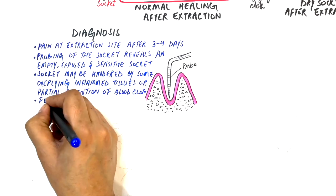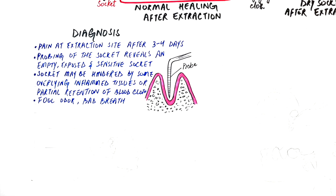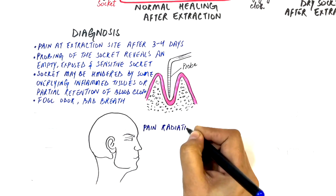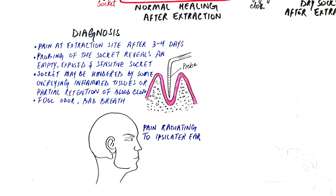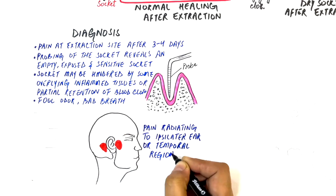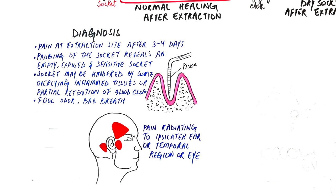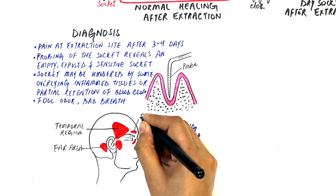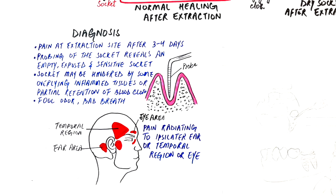Other symptoms include foul odor, bad breath, and less frequently swelling and lymphadenopathy, which might also be present three to four days after tooth extraction. Occasionally, the patient may also experience pain radiating to the ipsilateral ear, the temporal region, or eye area on the affected side, and rarely individuals can have trismus of the jaw, which is the inability to open one's mouth.